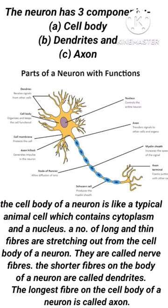A neuron has three components: cell body, dendrites, and axons. The cell body of a neuron is like a typical animal cell which contains cytoplasm and a nucleus.